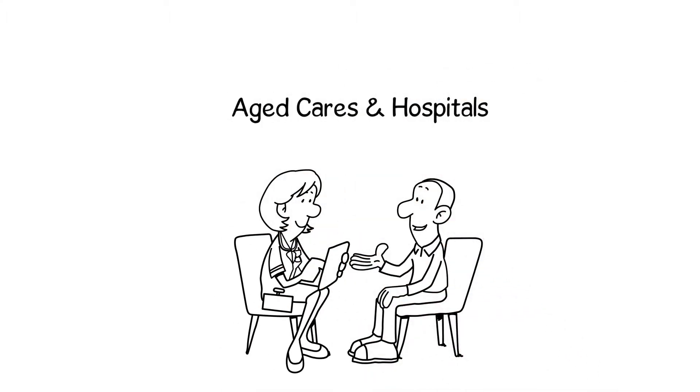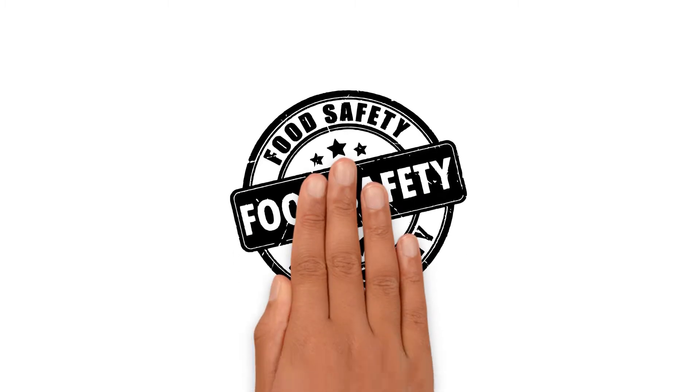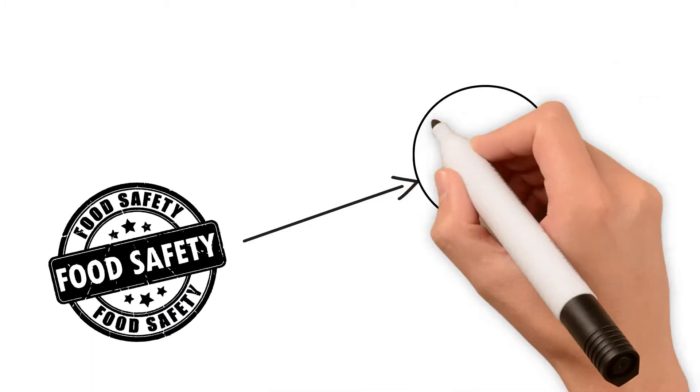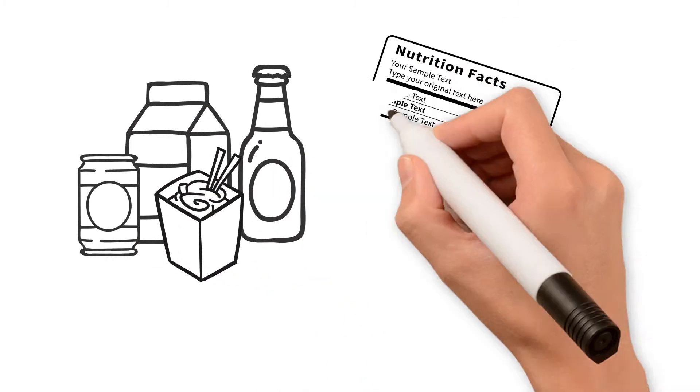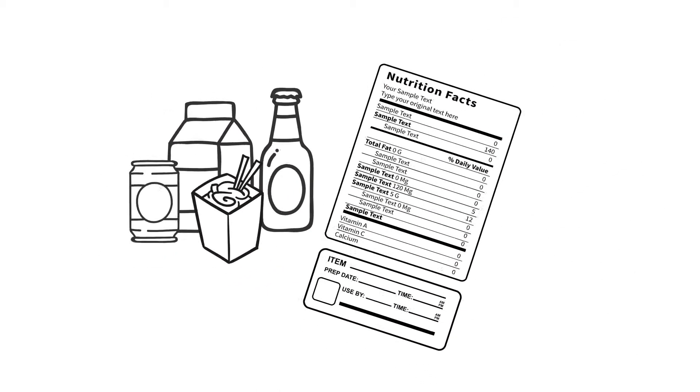Attention aged cares and hospitals. One of the key aspects of food safety is food labeling. All items prepared on-site or brought from outside must have appropriate label and use by date.